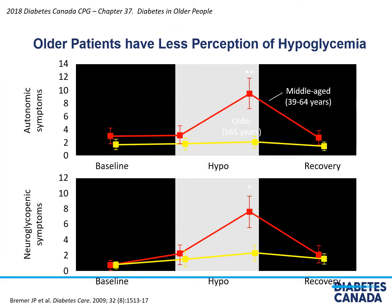This slide illustrates why older people are more susceptible to hypoglycemia. During hypoglycemia, older people are almost completely unaware of the autonomic and neuroglycopenic warning symptoms. Middle-aged patients have clear symptom awareness during hypoglycemia, but the elderly do not.